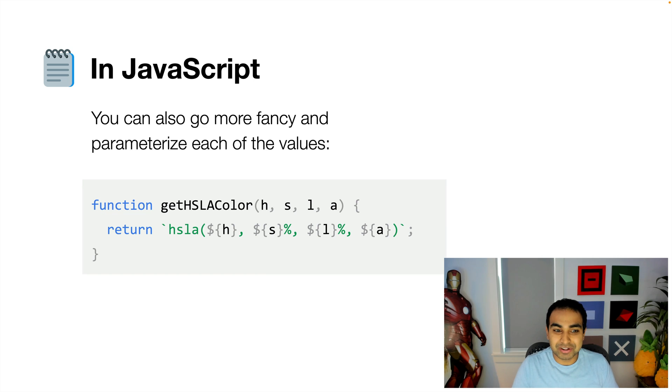So here I have a function called getHSLAColor where I pass in the arguments for hue, saturation, lightness, and alpha, and in return get a string that I can provide as the input to a CSS style property that needs it to represent a color. So very handy there.